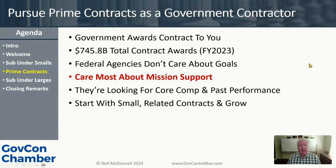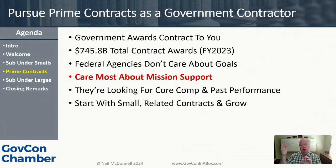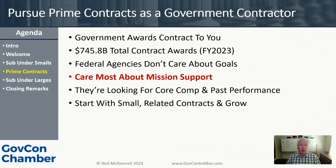The next revenue stream is pursuing prime contracts as a government contractor. The company that signs the contract with the government is the prime contractor — whether it's a product, construction, or services company. You want to pursue those contracts because the government spent $745 billion in total contract awards in 2023. You need to take that $745 billion and break it down: how much did they spend on what I do?